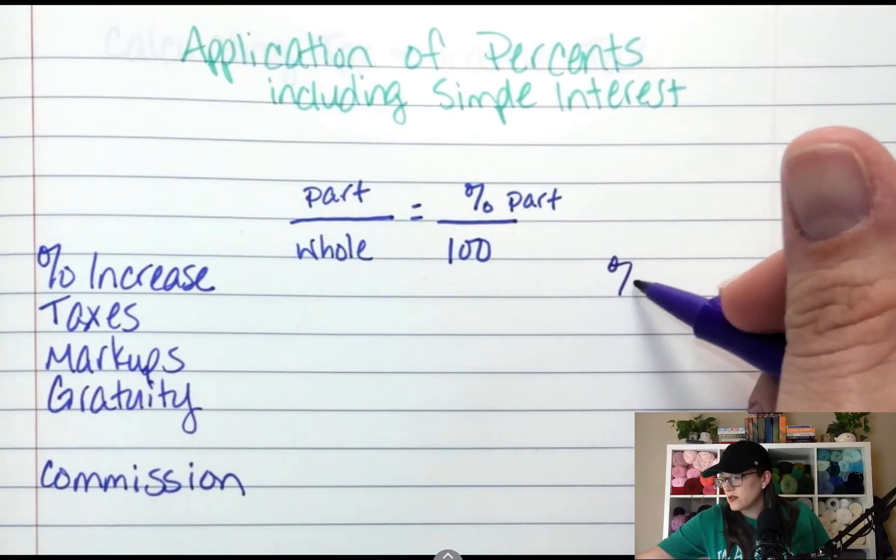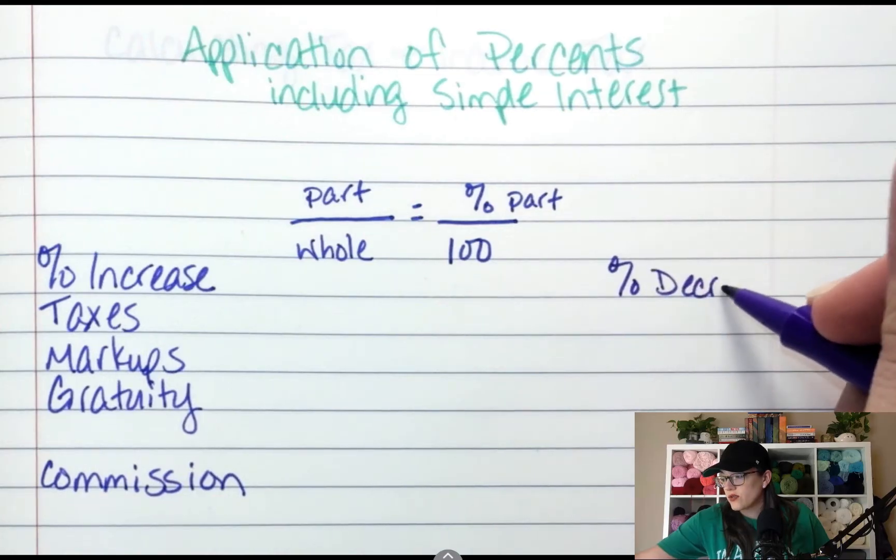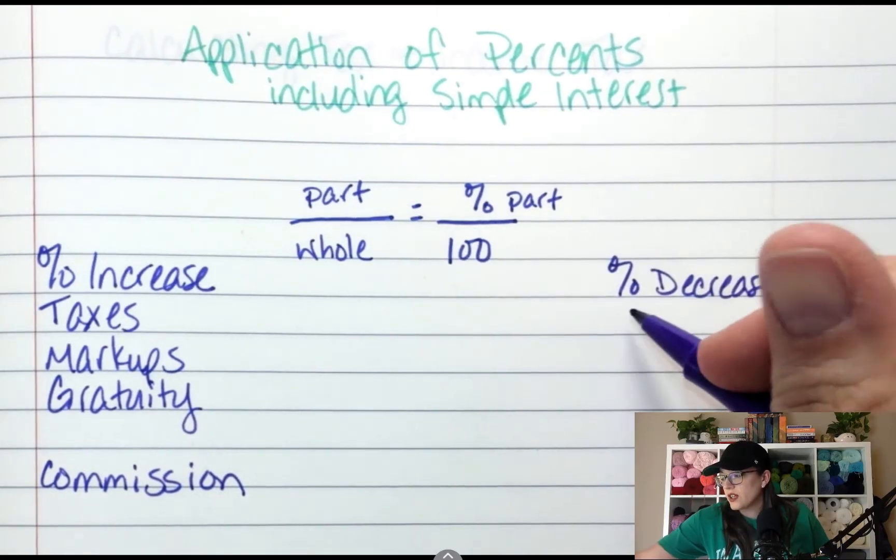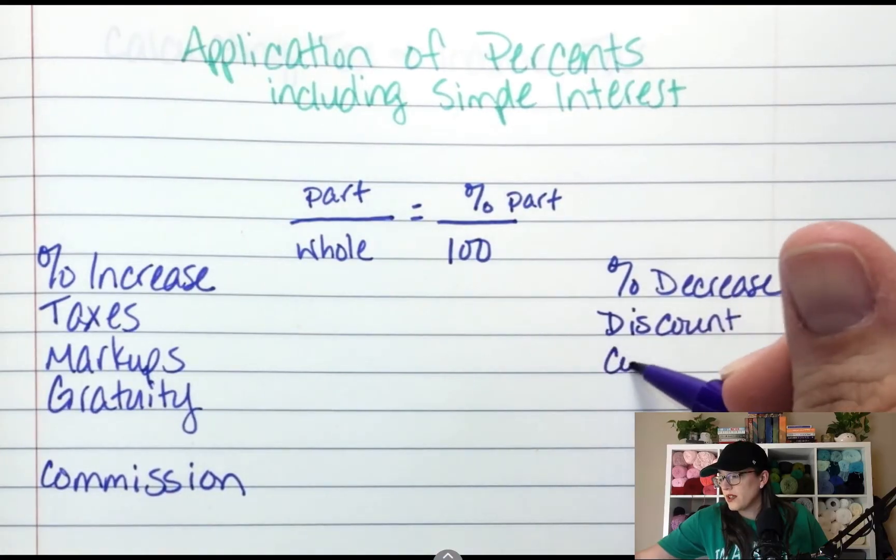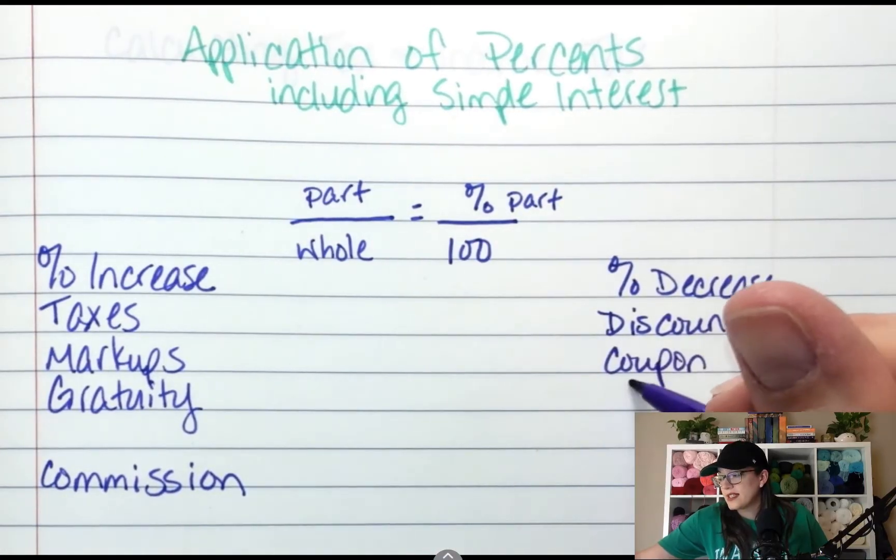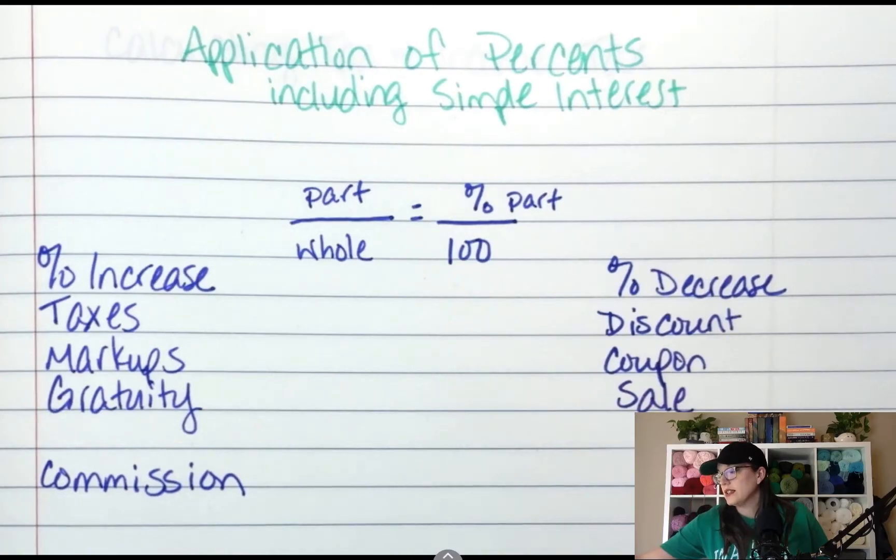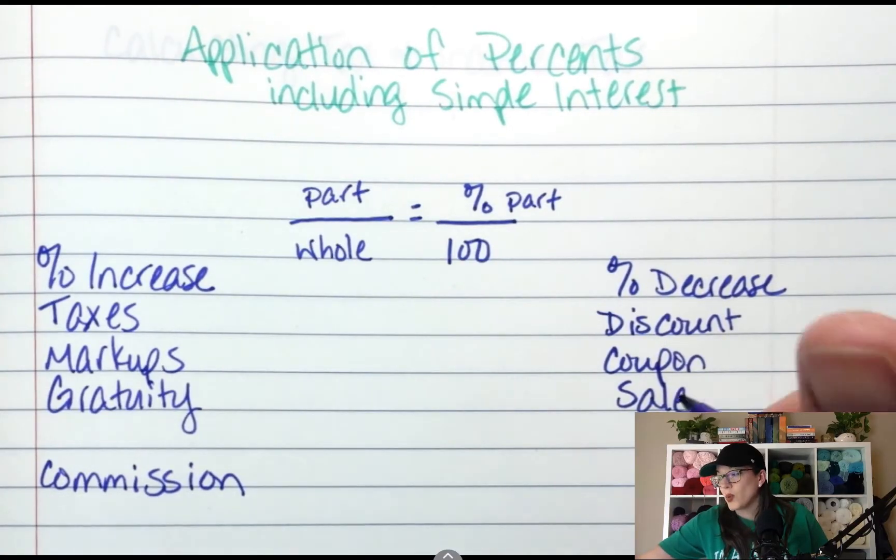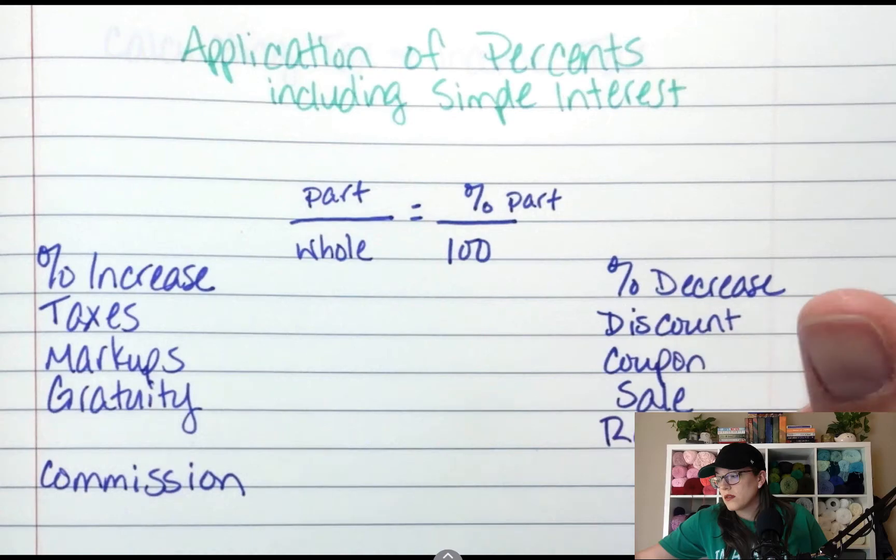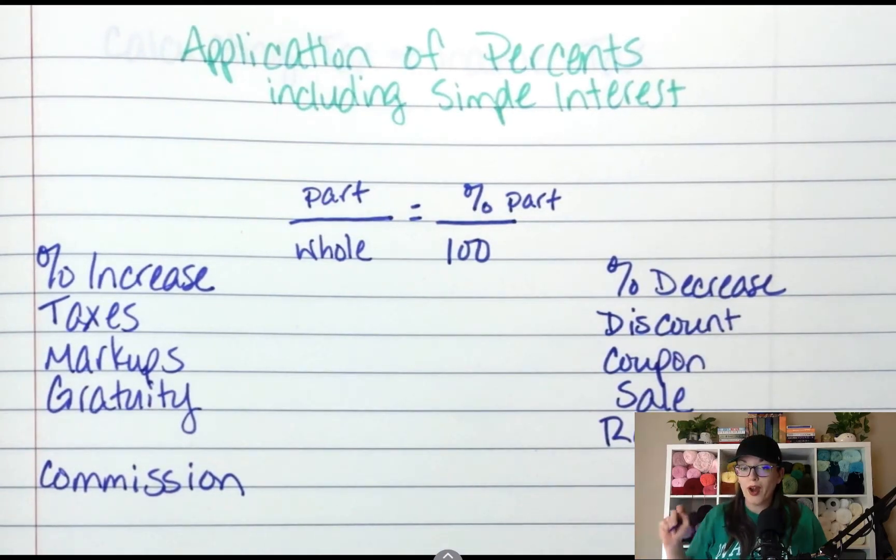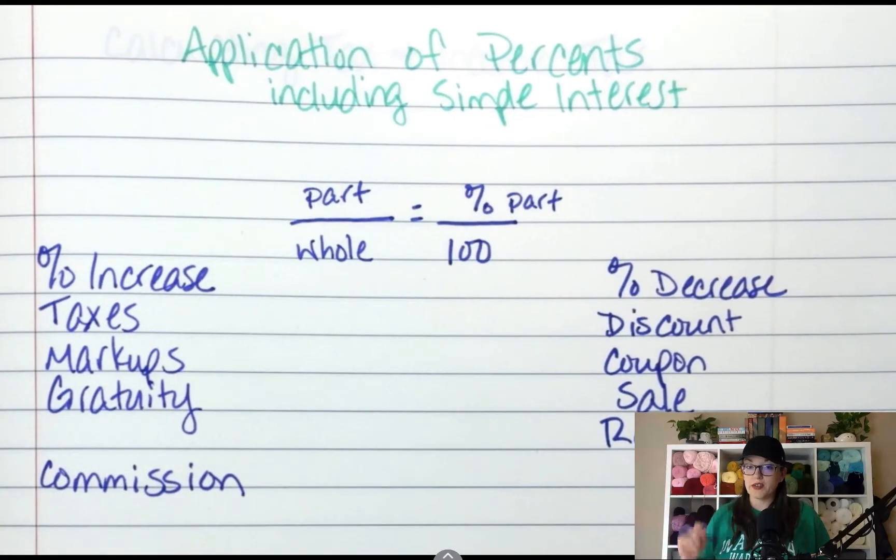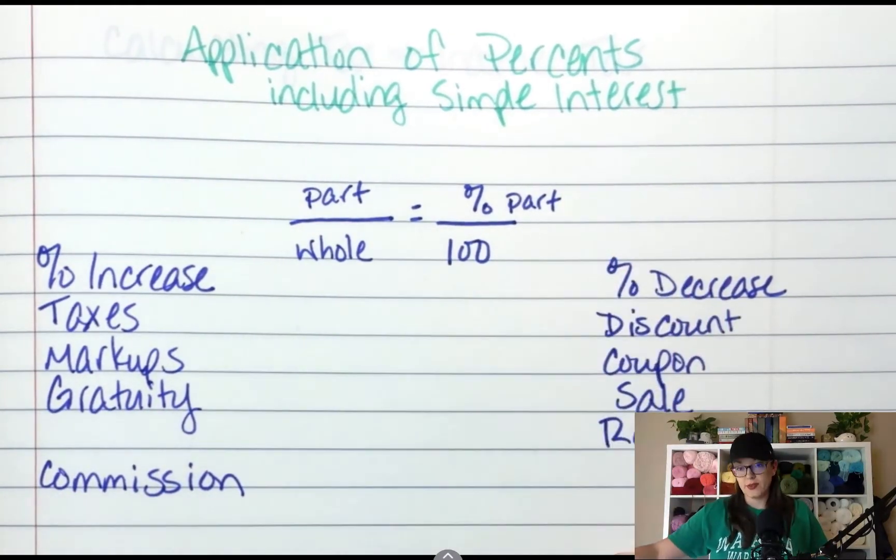Decreases. Again, this is just review. These are going to be discounts, coupon, a sale, a rebate maybe. Anytime you see these words, the original price goes down. When you see these words, you get more. When you see these words, you pay less.